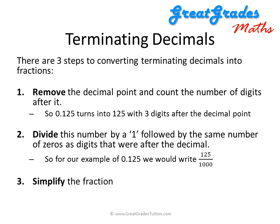Then we need to simplify the fraction. So 125 over 1000 simplifies by dividing each number by 5 to give 25 over 200, then dividing by 5 again gives 5 over 40, and finally dividing by 5 once more gives our final fraction of 1 over 8. So we've converted 0.125 into its lowest fractional form, which is 1 over 8.